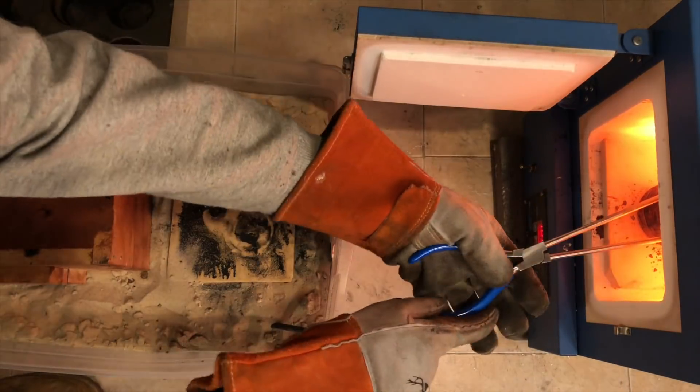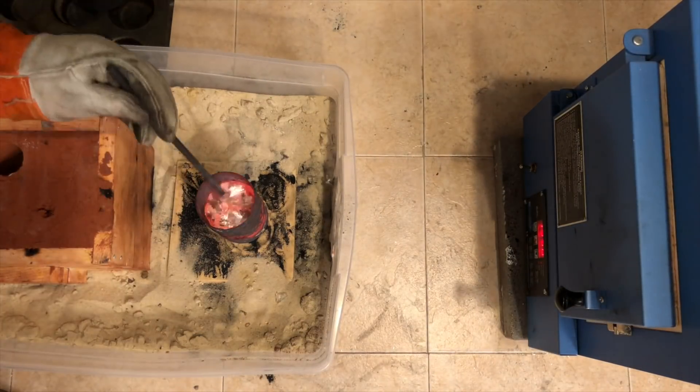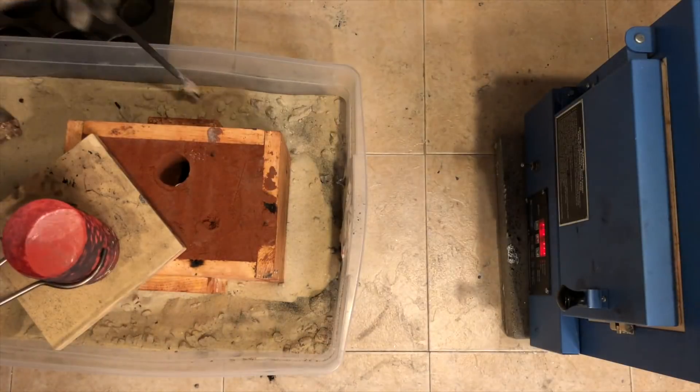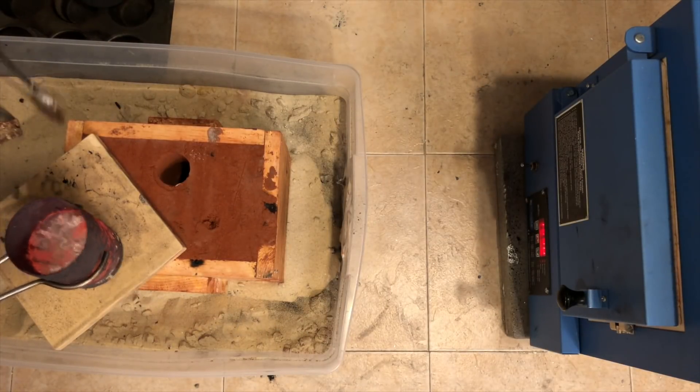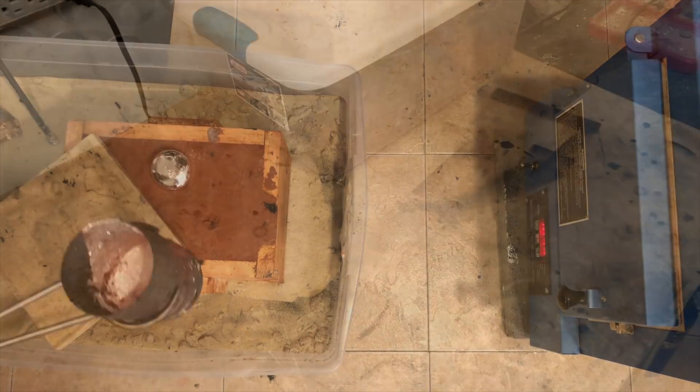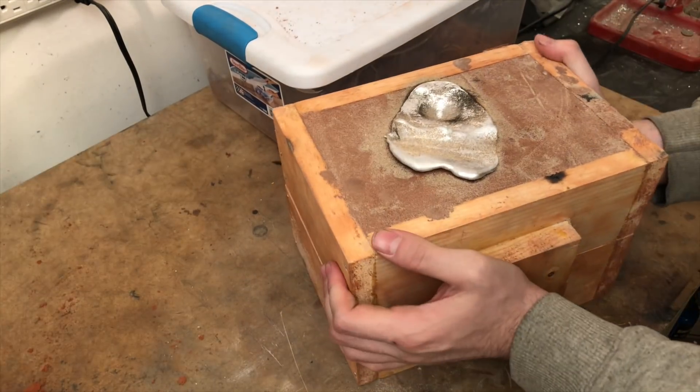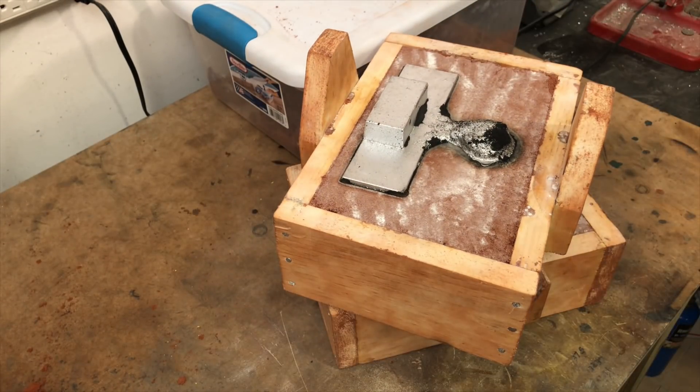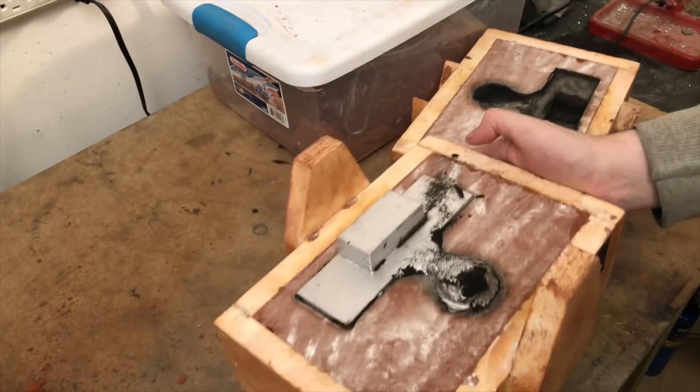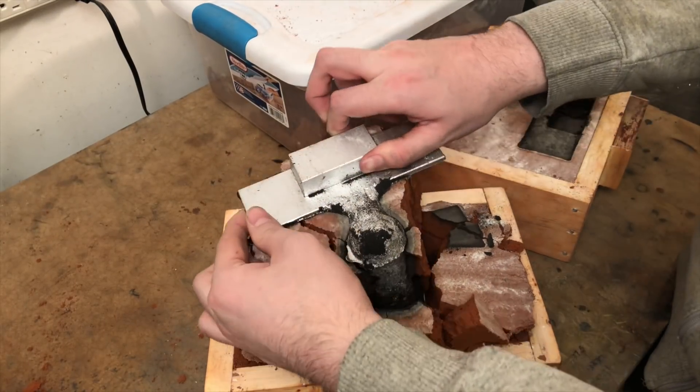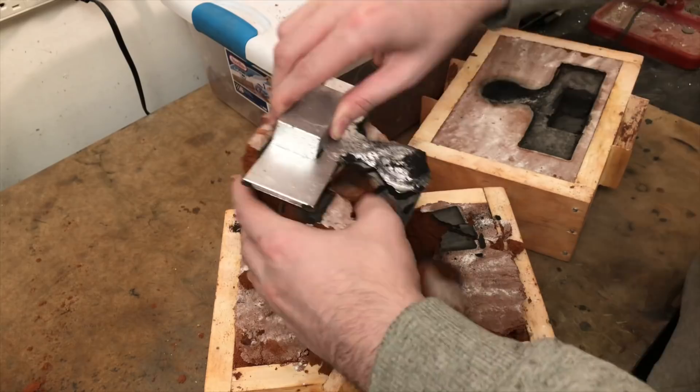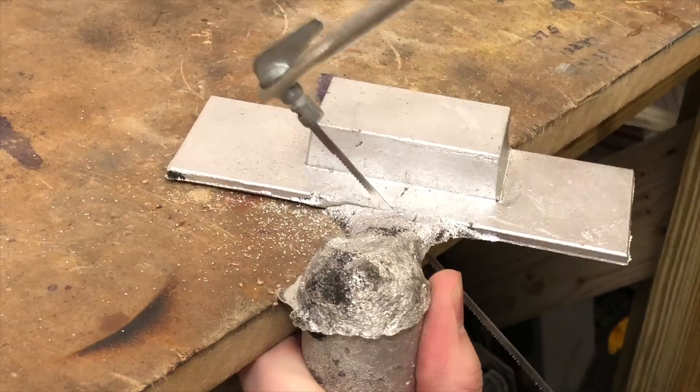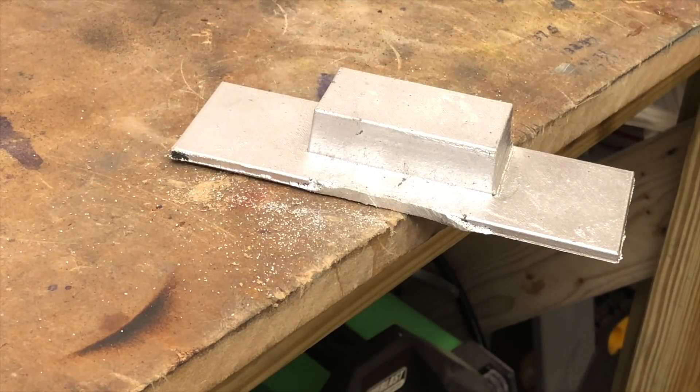The aluminum is melting and seems to be flowing. There does seem to be some black stuff floating around though. Well, the pour seems to have been successful. Nothing obvious has gone wrong. Let's get the sprue cut off real quick and have a closer look.